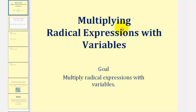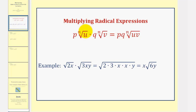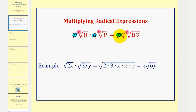Welcome to a lesson on multiplying radical expressions with variables. As we saw in our previous lesson, to multiply two radical expressions when the index is the same — in this case n — we multiply the terms outside the radicals together (p times q), then we multiply the radicands together — the terms under the radicals (u times v) — and then we simplify the result if possible.